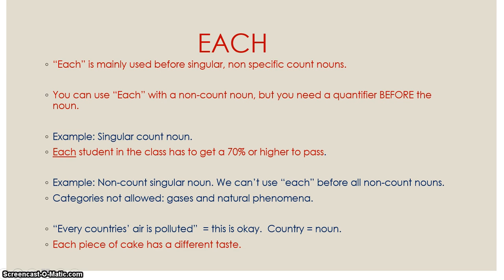Each is mainly used before singular, non-specific count nouns. You can use each with a non-count noun, but you need a quantifier before the noun. We can't use each before all non-count nouns — there are certain categories that are not allowed. Those categories are found on page 94 of your book. The categories not allowed are non-count nouns that belong to gases and natural phenomena.